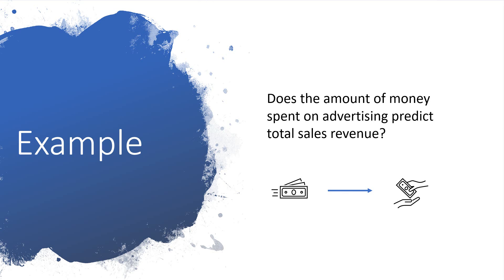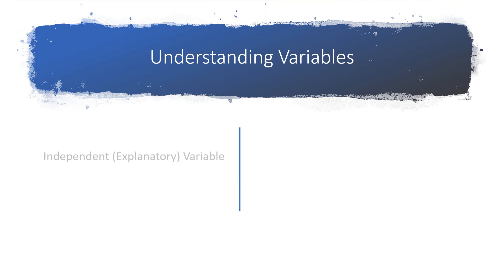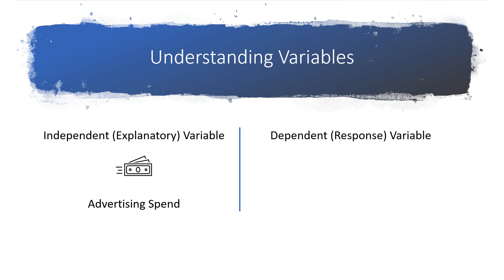Let's start with an example of a simple linear regression. Imagine you want to find out if the amount of money spent on advertising can predict total sales revenue. The independent variables, also called explanatory variables or predictors, represent items that may have an influence on the dependent variable. In this example, advertising spend is the independent variable. The dependent variable, also called a response or outcome variable, represents the outcome of interest. In our example, sales revenue is the dependent variable, as it is being modeled to depend on advertising spend.